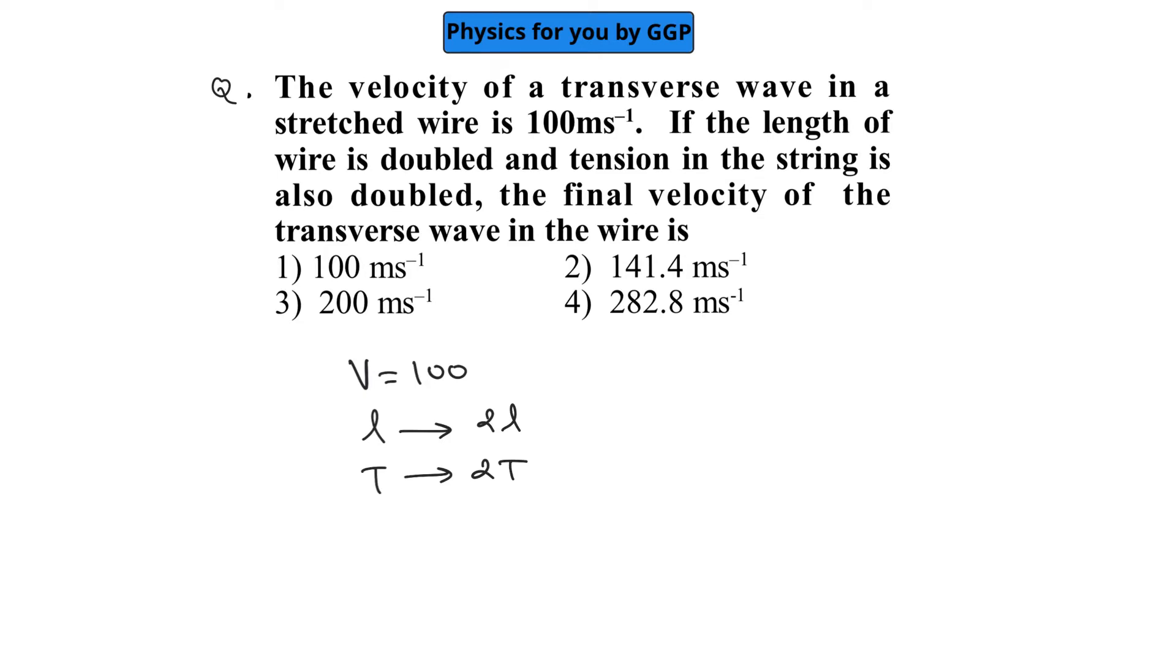We know the equation for velocity of a wave: V equals the square root of T divided by μ, where μ is the linear mass density, which is mass per unit length.